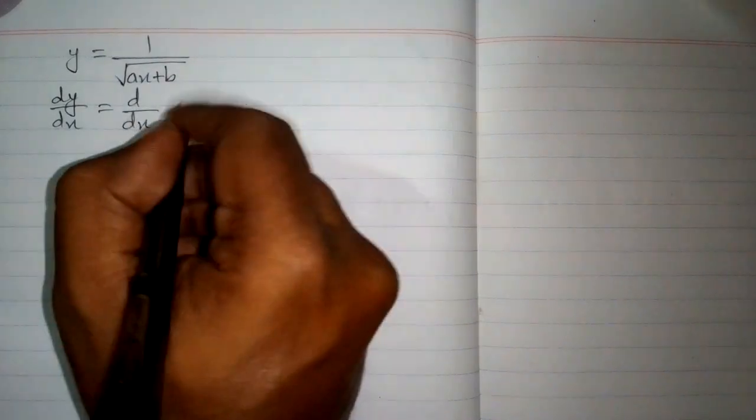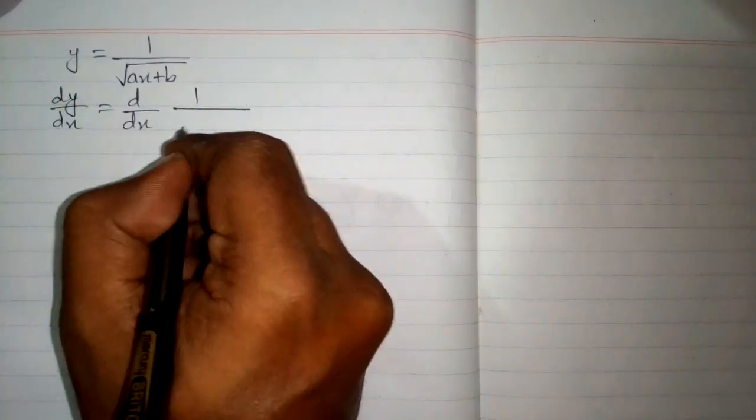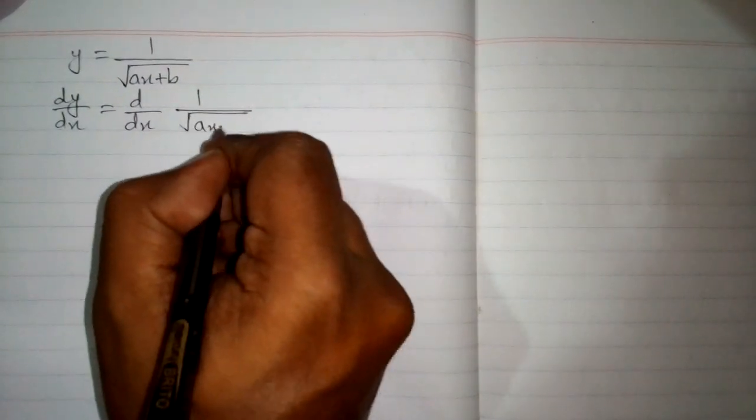In this video, we will find the derivative of the function y is equal to 1 upon square root of ax plus b. So, first we will differentiate both sides with respect to x. We have dy by dx is equal to d by dx of 1 upon square root of ax plus b.